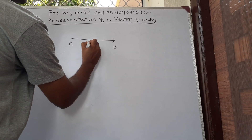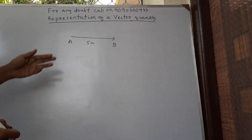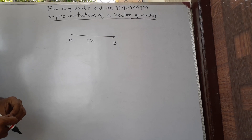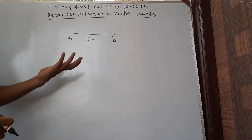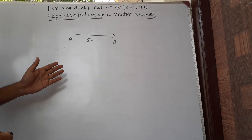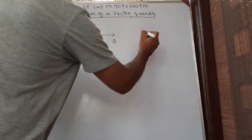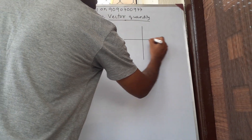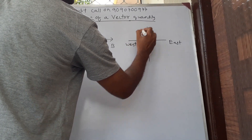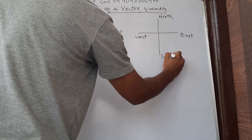In the figure, AB is a ray. The magnitude or length of the ray is represented as 5 meters. If I am talking about the length of the ray, it is 5 meters — it's a scalar quantity because length is a distance. But I have to assign direction, so before I discuss further about this diagram, just remember the directions.